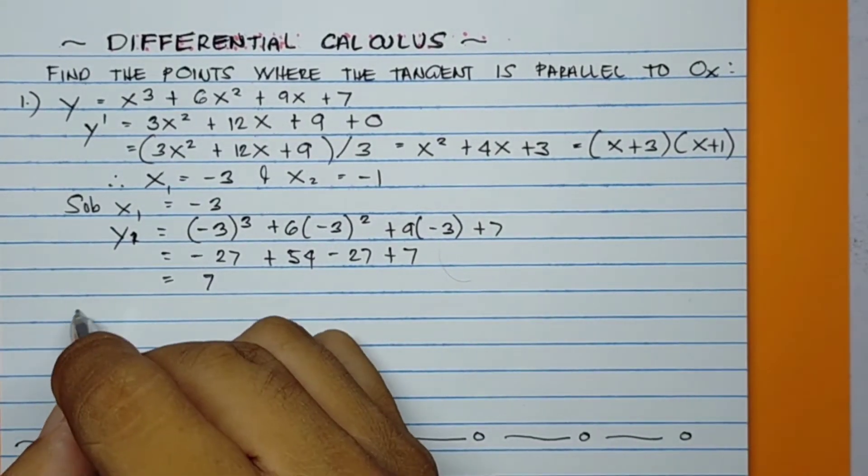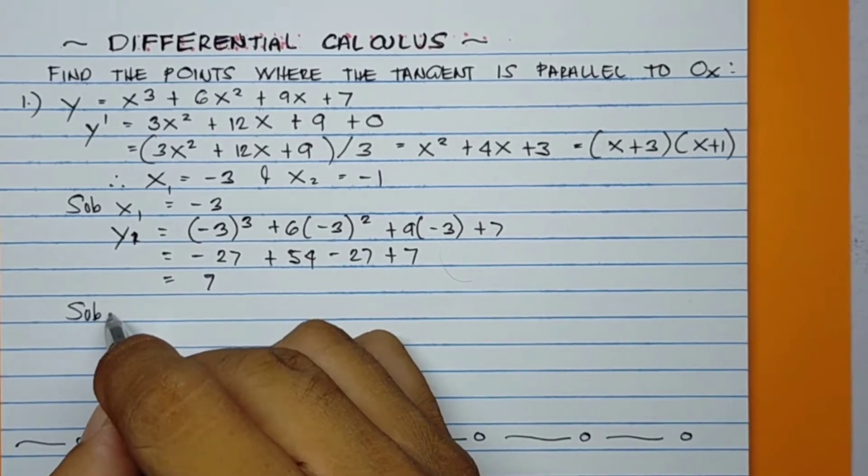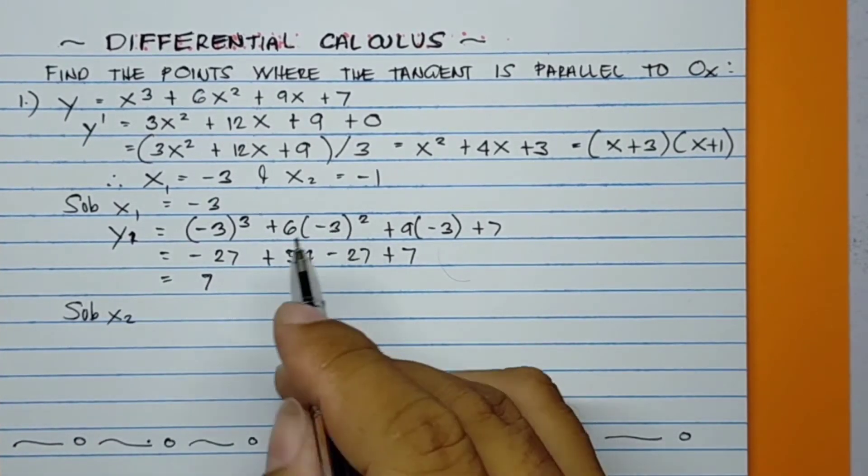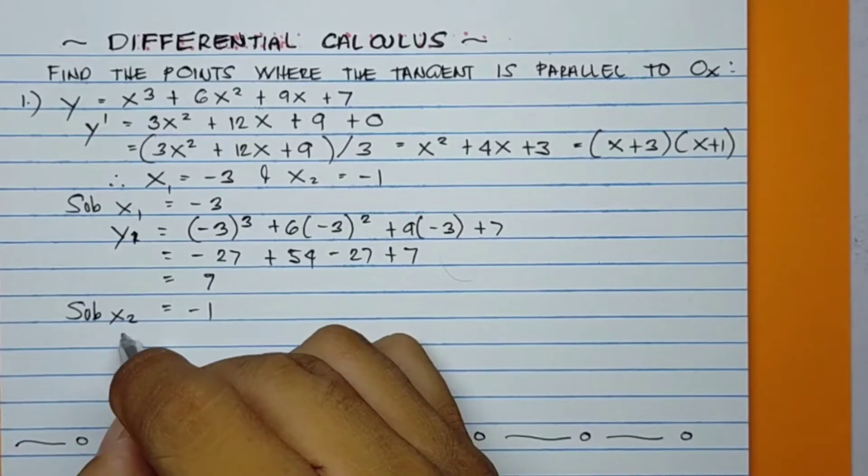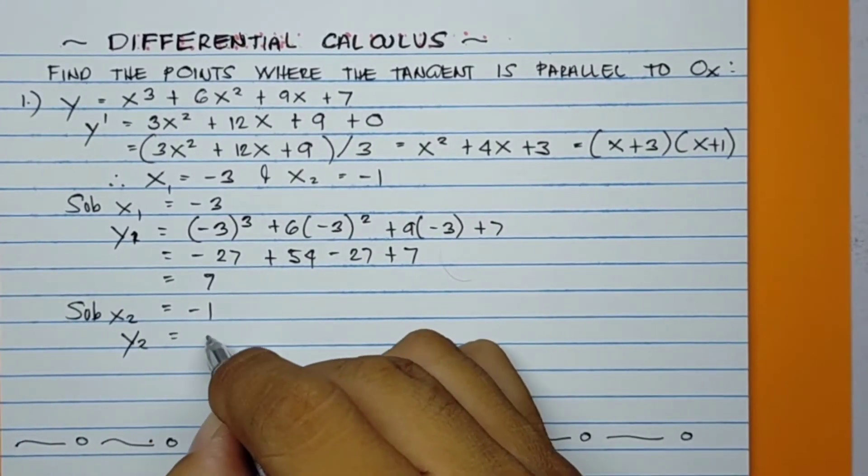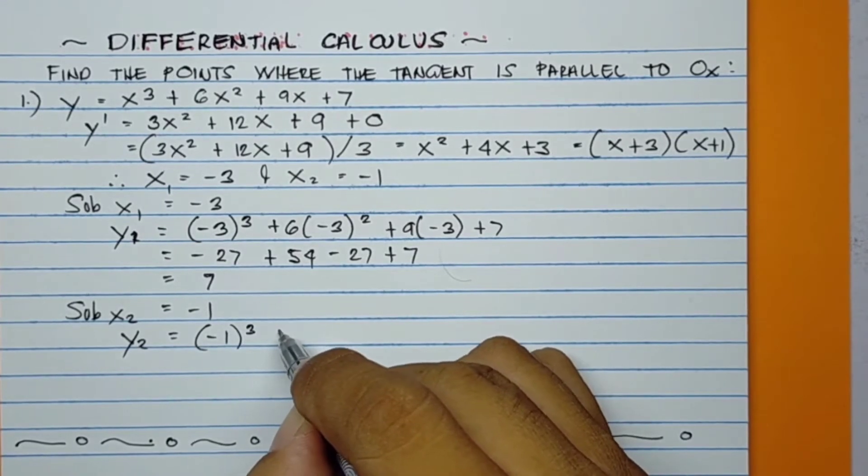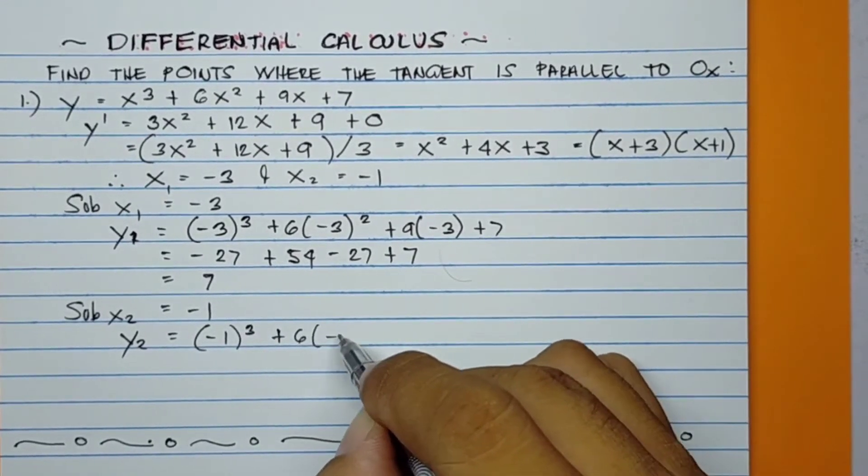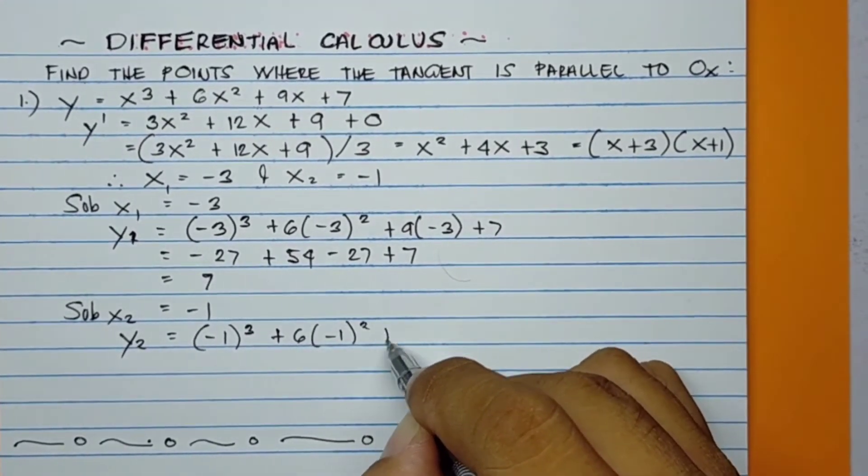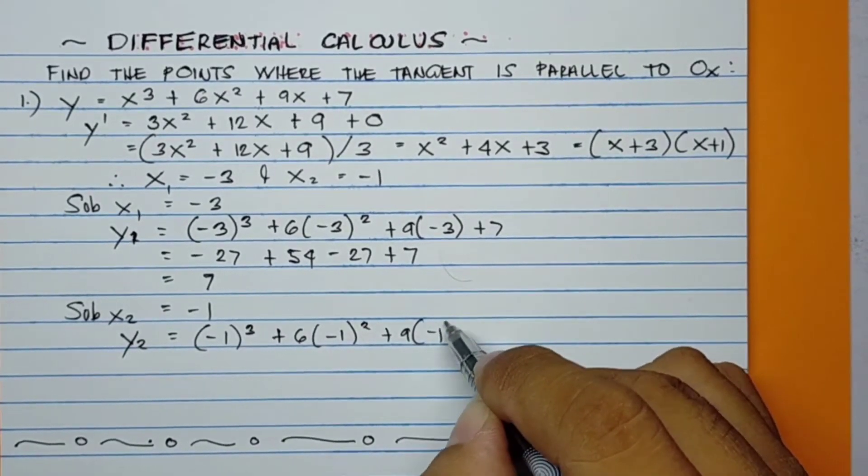Now substitute x₂ = -1 to the original equation. Therefore, y₂ = (-1)³ + 6(-1)² + 9(-1) + 7.